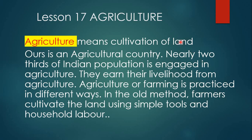Agriculture means cultivation of land. Agricultural land is very important — you must have your own field and land. The quality of the soil and quality of the land matter greatly. Soil is not the same everywhere; it differs from place to place and has many types, such as black soil, sandy soil, red soil, and brick soil.